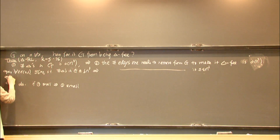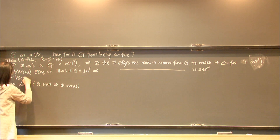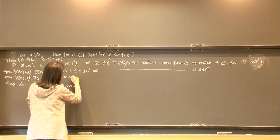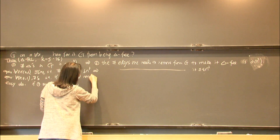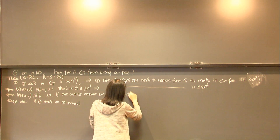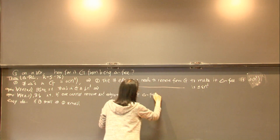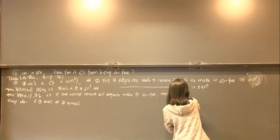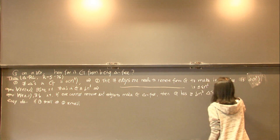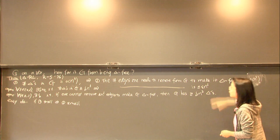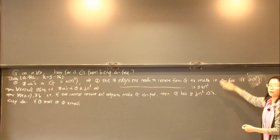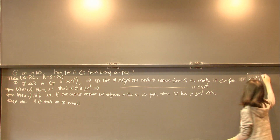Equivalently, for any epsilon there exists a delta such that if one cannot remove epsilon·n² edges to make G triangle-free, then G has many copies of triangles — at least delta·n³ triangles. The first two formulations are easier to remember and the third is easier to prove by the proof technique, but they are all equivalent to each other.